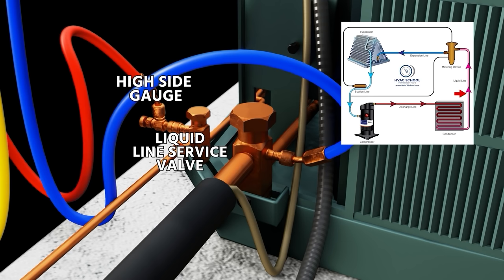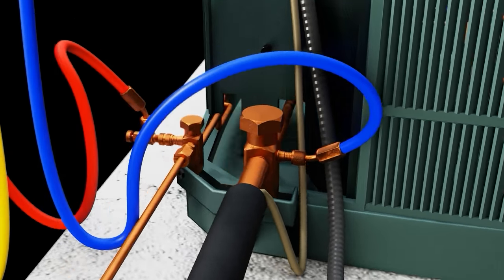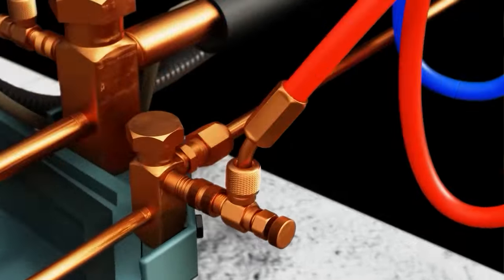We're then going to put our blue hose, which goes to our low side manifold gauge, on our suction line. Without a core depressor, because it's low pressure, you're not going to have the same losses.